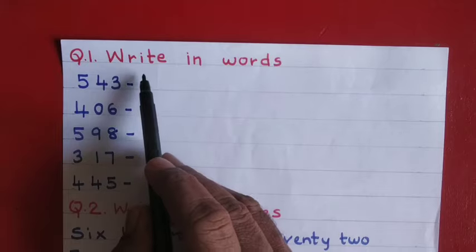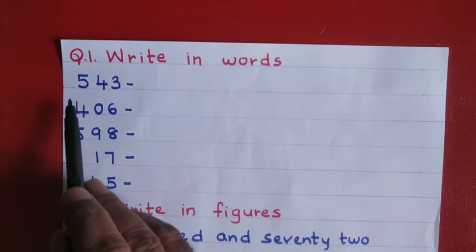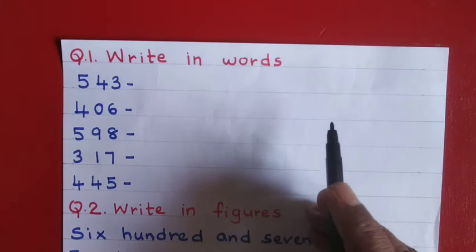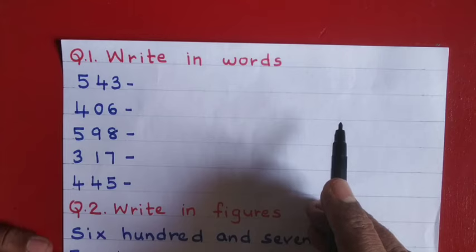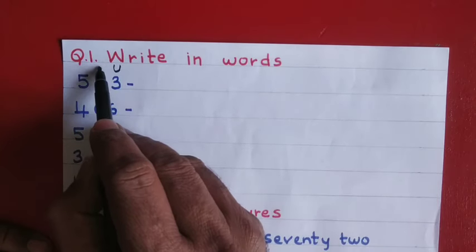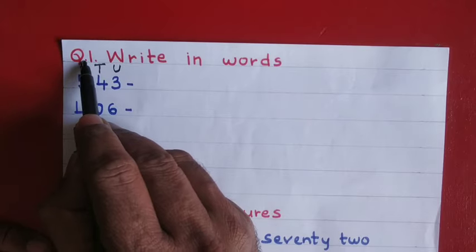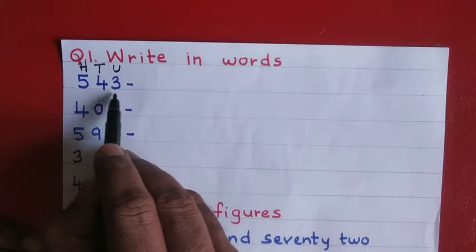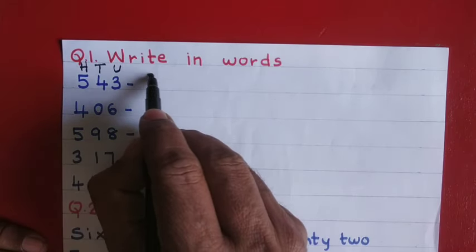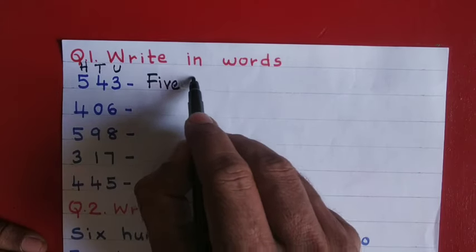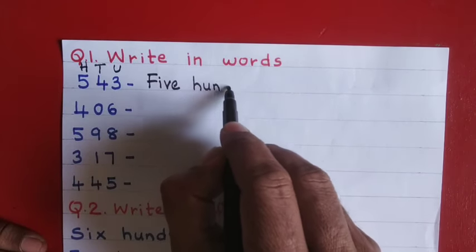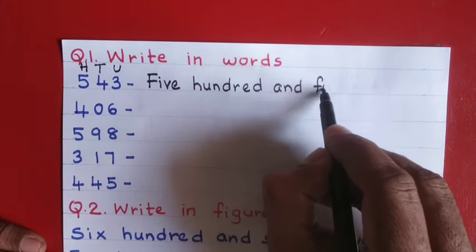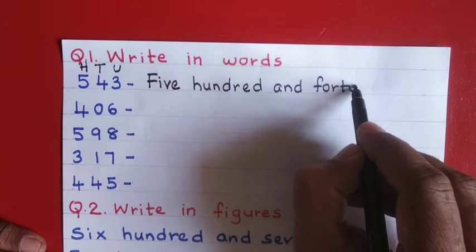Question number one: write the number in words. A number is given and you have to write it in spelling. Write the place values — hundreds, tens, and units — then read it. You can read easily: five hundred and forty three. Then write the spelling: five hundred and forty three.